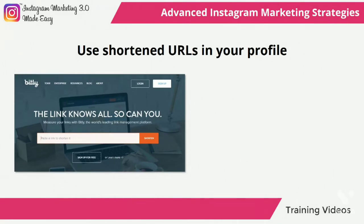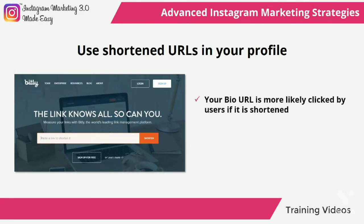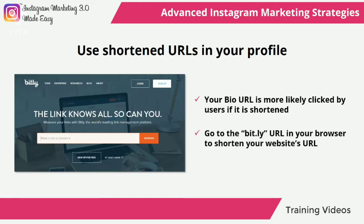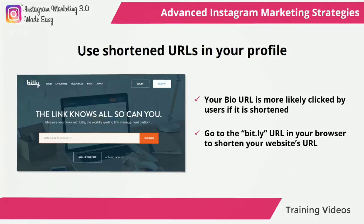Use shortened URLs in your profile. Your bio URL is more likely to be clicked by users if it is shortened. A great way to optimize your profile's URL is by shortening it with a link shortening service. We recommend you to use the Bitly service, which is free and works great. Go to the Bitly URL in your browser to shorten your website's URL. You can always go back to your site's Bitly page to track the number of visits that your site is getting through Instagram, basically using it as a backlink as well as a tracking pixel.